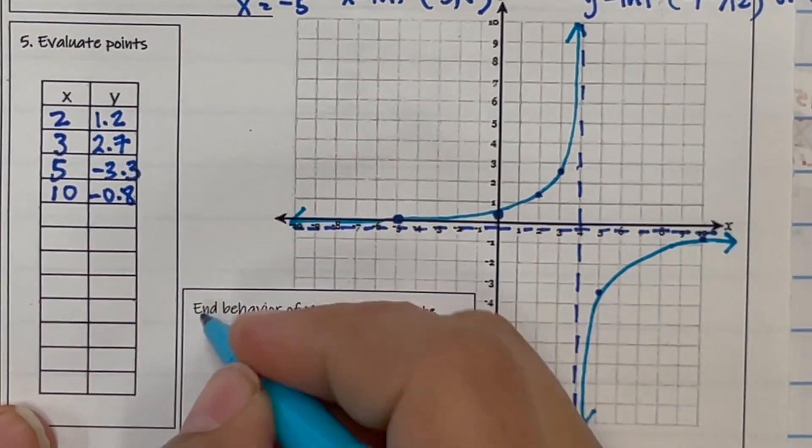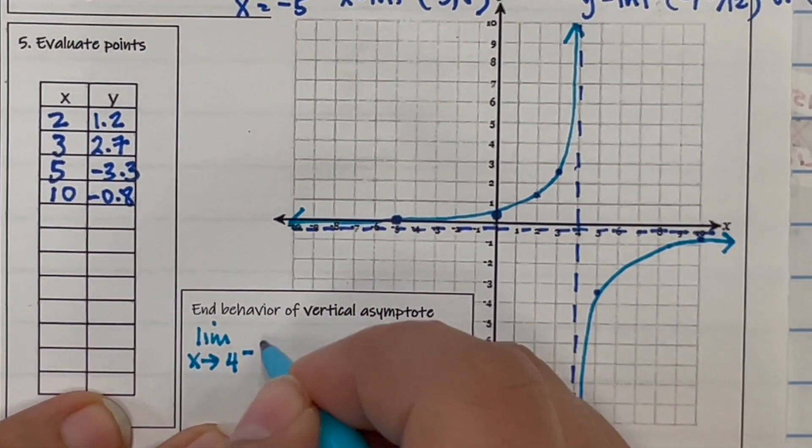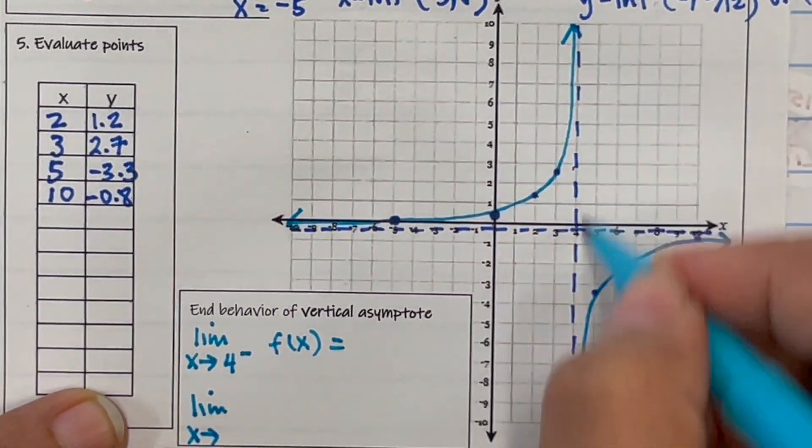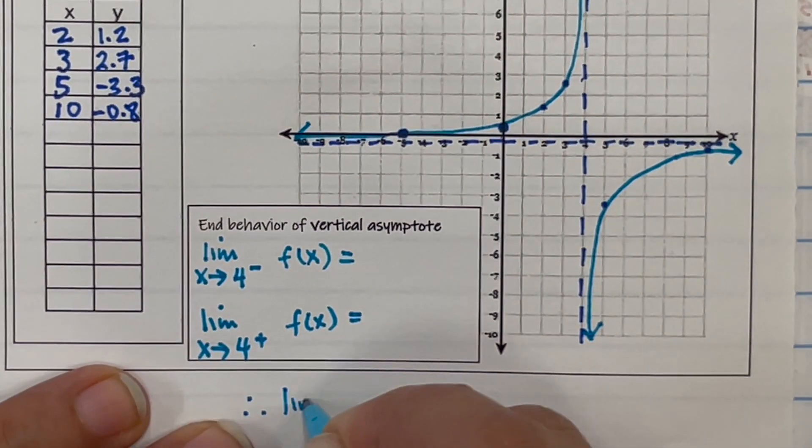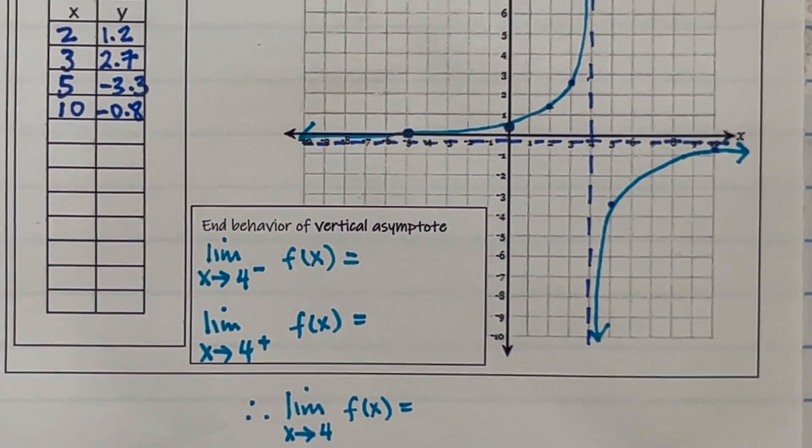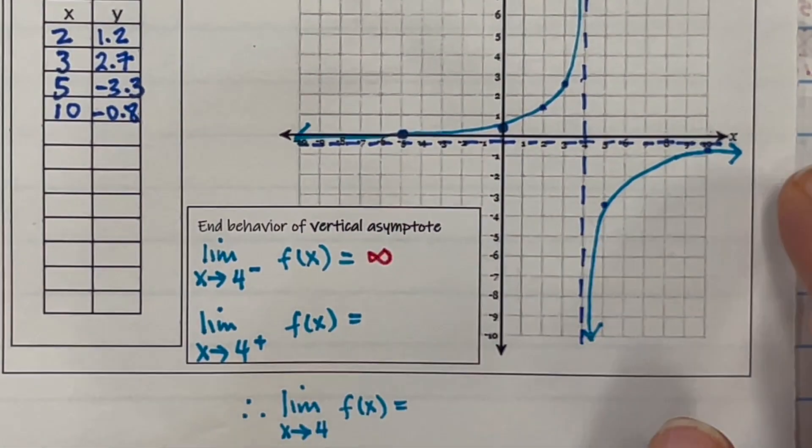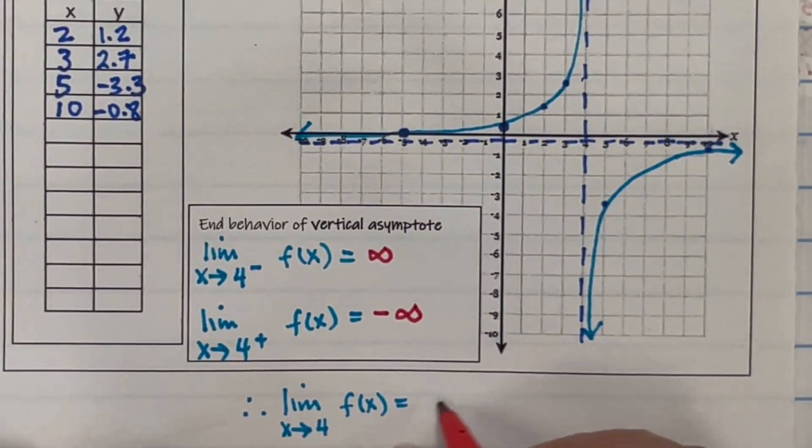Now we're going to evaluate the end behavior of a vertical asymptote. The limit as x approaches what number is my vertical asymptote? 4 from the left of my function is equal to what? The limit as x approaches 4 from the right of my function is equal to what? And therefore, does the limit as x approach 4 of my function exist? So let's take a look at it. So if I'm coming, following the graph from the left, where am I going? Positive infinity. From the right, following the graph, where am I going? To negative infinity. What is the limit as x approaches 4 of this function? You tell me. Complete example 2 as additional practice.